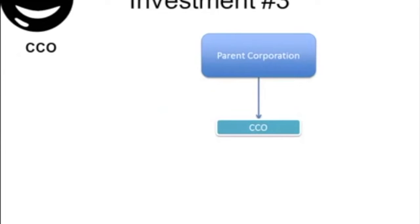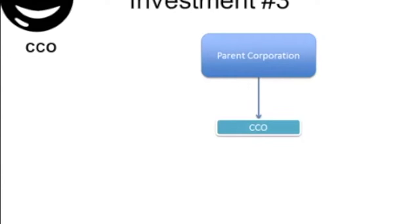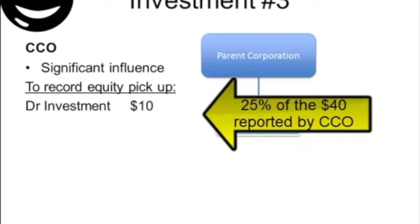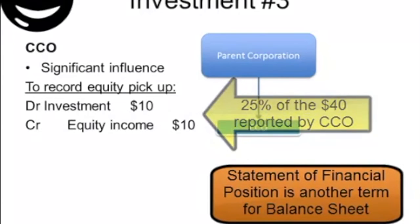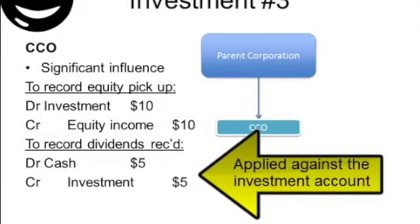SECO is a strategic investment where Bob, through PECO's investment, holds enough shares to significantly influence the strategic direction of the company. In this situation, the equity method of accounting is appropriate. In applying the equity method, PECO picks up its proportion of the net earnings and loss and reports that as equity income. The offsetting entry increases the investment account on the statement of financial position. Any dividends received are recorded through the investment account, avoiding double counting income. Think of dividends like a return of capital when using the equity method.